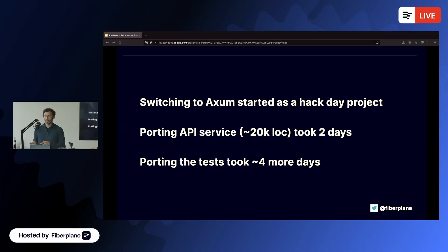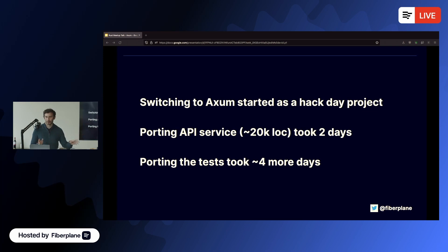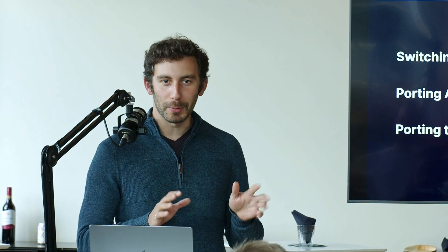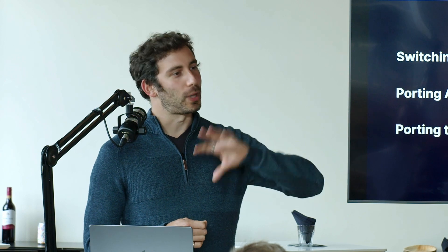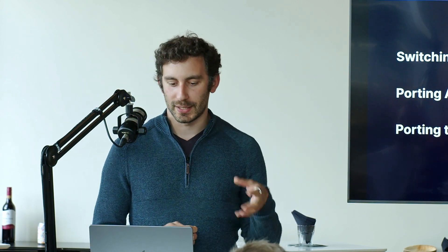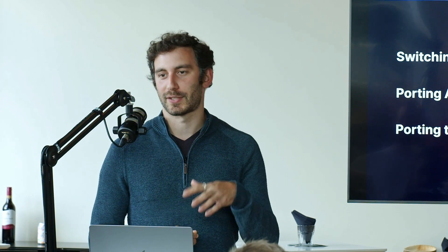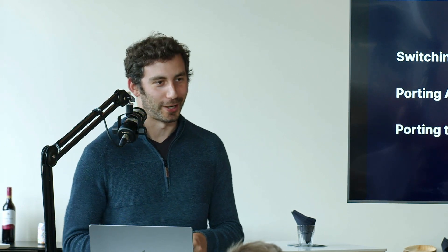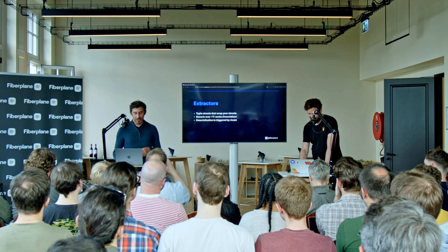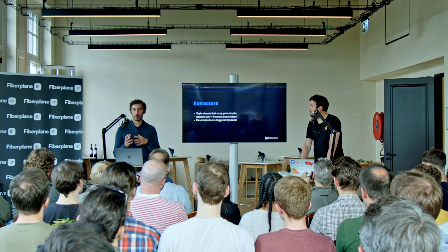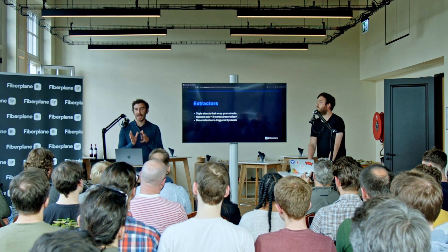Every month we have a hack day on Friday where everybody can hack on whatever they want. Switching to Axum started as a hack day project where the two of us tried to see if we could do it in a day. It took a little bit more than a day — porting the actual API service took about two days for around 20,000 lines of code, and then porting the tests took another four days.